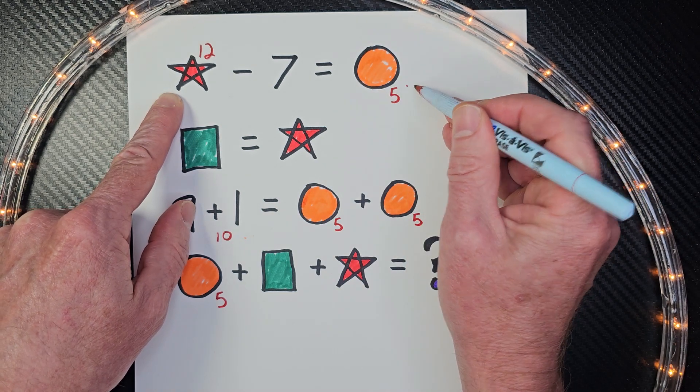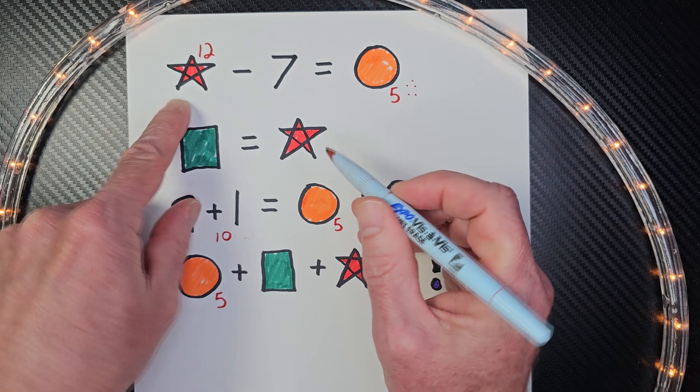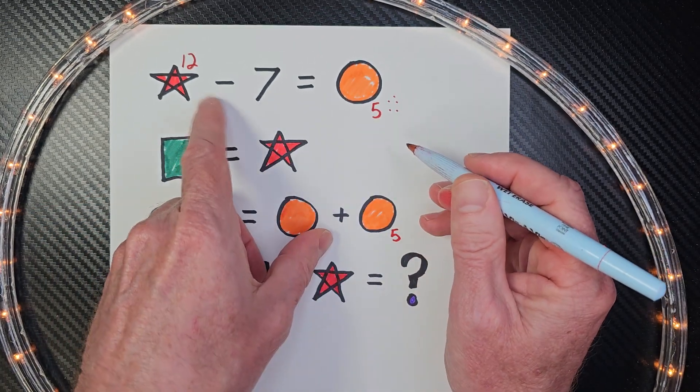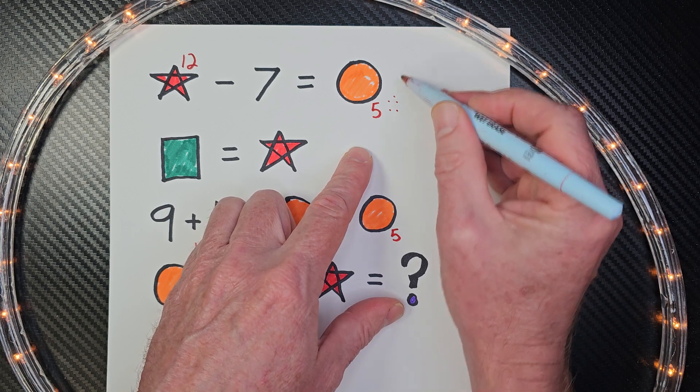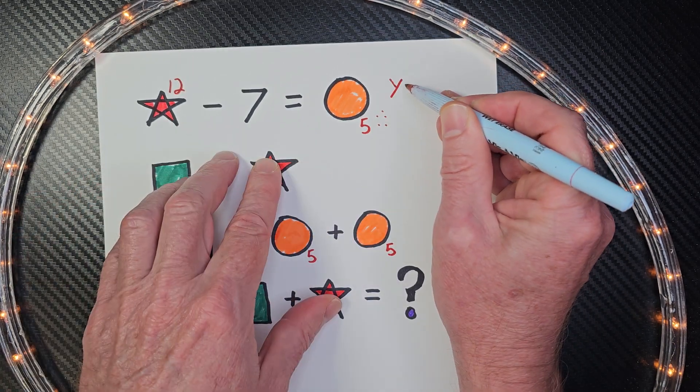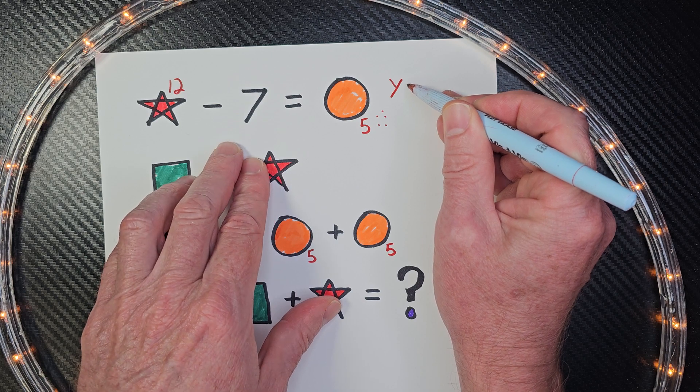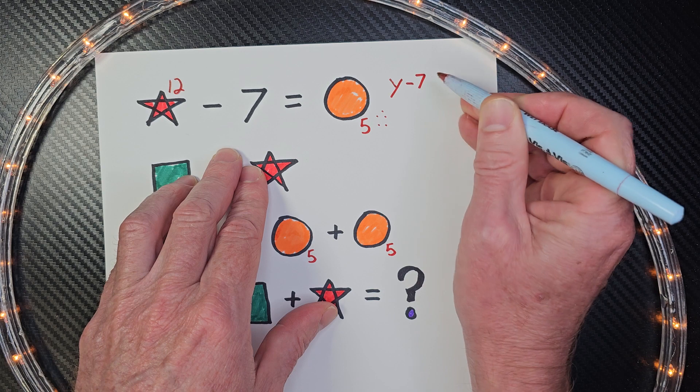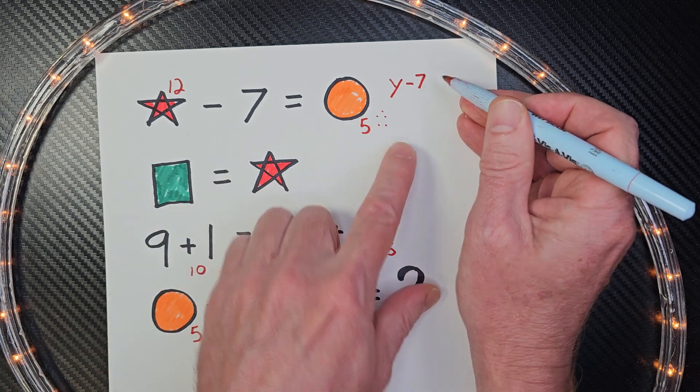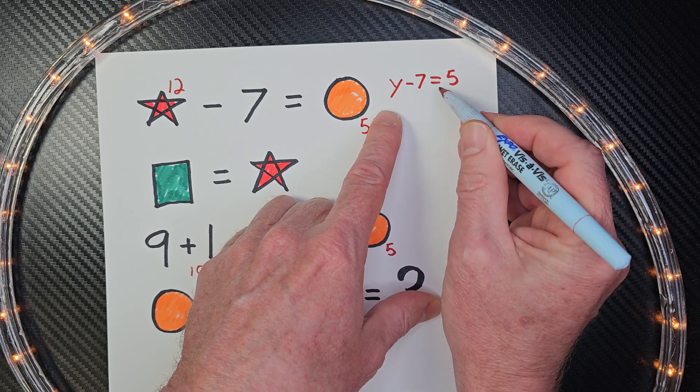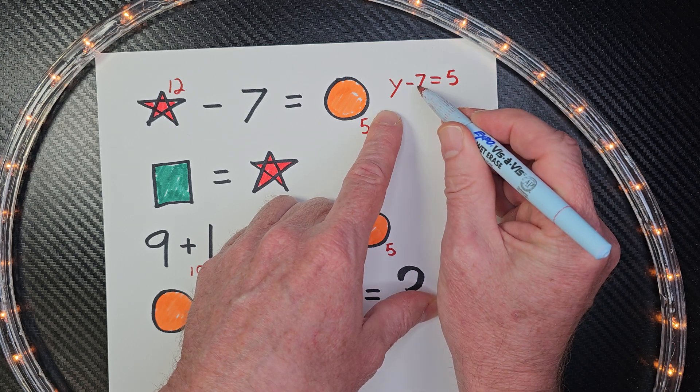Just to kind of go off course a little bit, this is an interesting problem right here. Let's put y as the star: y minus 7, and then equals 5. So I need to get this alone. The opposite of subtraction would be addition.